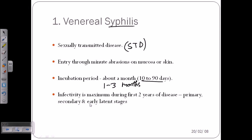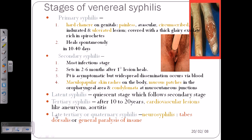There are four different stages: primary, secondary, latent, and tertiary. So this is a four-stage disease. Let's begin with the stages of venereal syphilis.